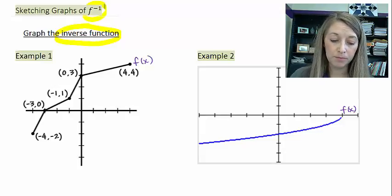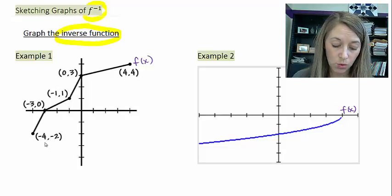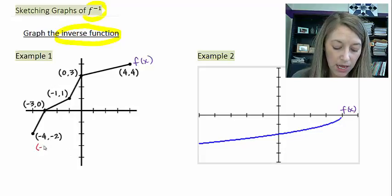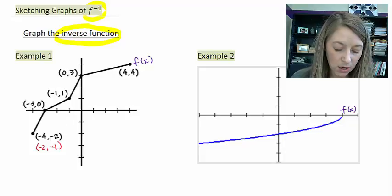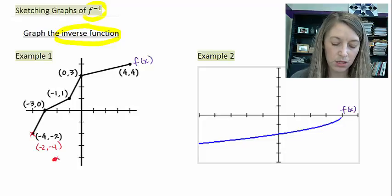Let's start with example one. I'm going to be doing that by interchanging my ordered pairs. So instead of (-4, -2), my ordered pair is going to be (-2, -4). So I go left two units, down one, two, three, four units. So this one gets interchanged with this right here.